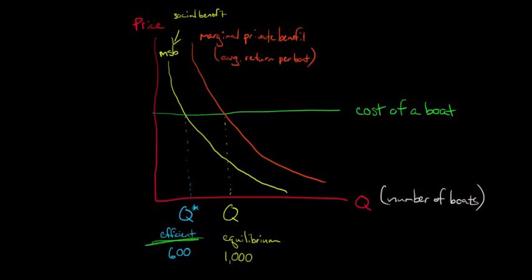The reason that the socially efficient number is lower than what the free market produces is because when you are making your decision to keep getting boats out there until your benefit equals the incremental cost, you're not considering the cost to other lobstermen.